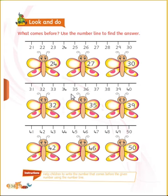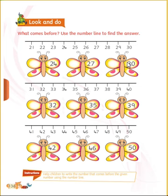Again, once more I will repeat for you. Carefully listen — aap ko ek baar mein repeat karta hoon, achhi tarah se suno. Twenty-four se pehle number konsa hatha? Twenty-three. Twenty-seven se pehle konsa number hatha? Twenty-six. Thirty — before which number will come? Twenty-nine.